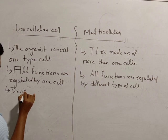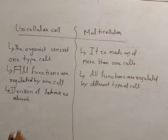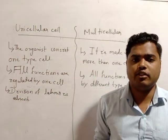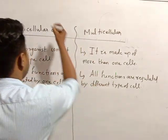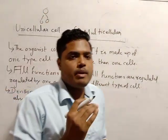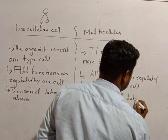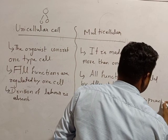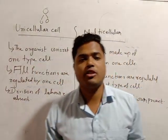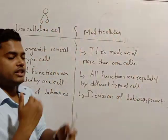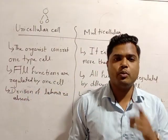Here in unicellular, division of labor is absent. In multicellular, division of labor is present because we have different cells for different functions through mitosis and meiosis processes.